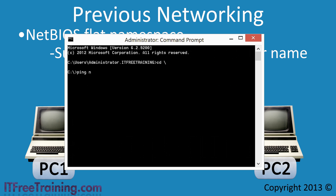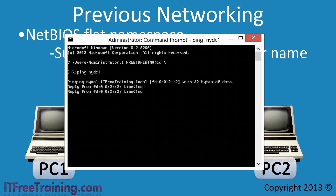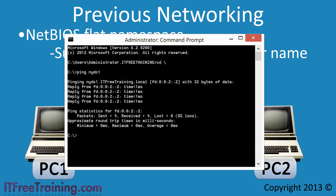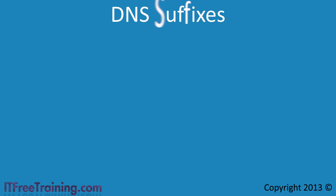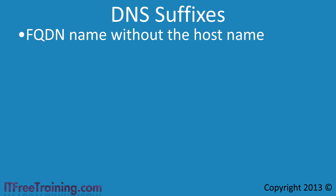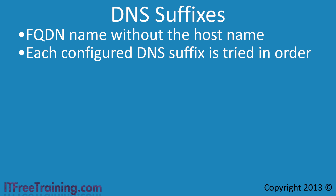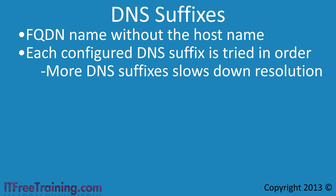For example, if you open a command prompt and ping NYDC1, Windows will automatically ping NYDC1.itfreetraining.local. Itfreetraining.local is added automatically by Windows. These are referred to as DNS suffixes. A DNS suffix is simply a fully qualified domain name without the host name. Each DNS suffix is tried in order, making it easy for the user to find services on the network. However, the more DNS suffixes that are configured, the longer it will take for the operating system to report that the address is not resolvable, because each suffix has to be tested first.